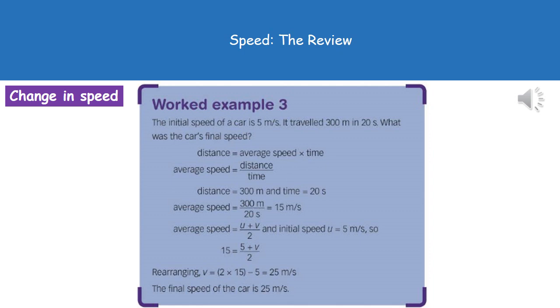That gives us the average speed of 15 meters per second. Now what we've got is our average speed and our initial speed from the question, so we can put those two numbers into that second formula. That gives us 15 equals 5 plus v divided by 2.